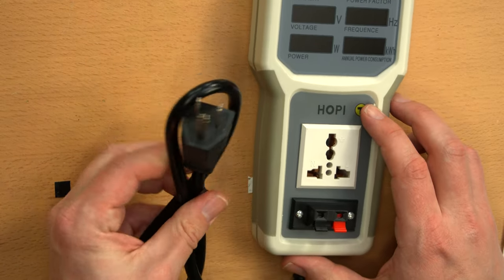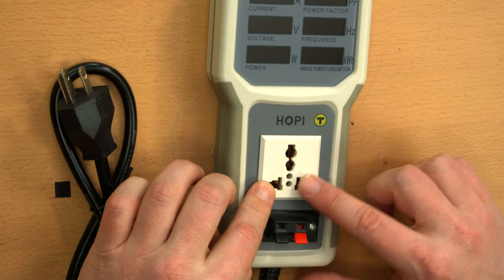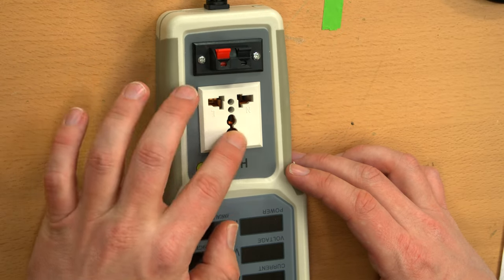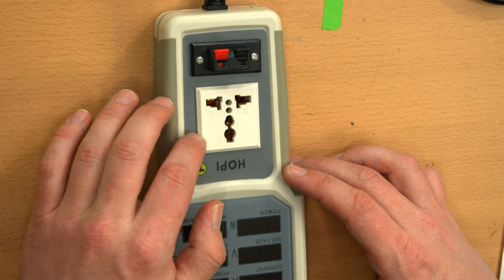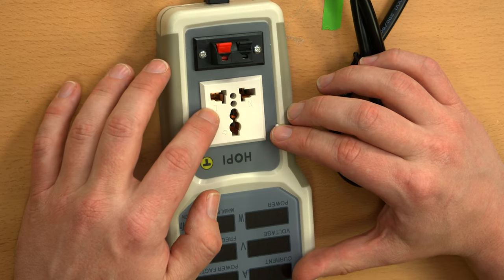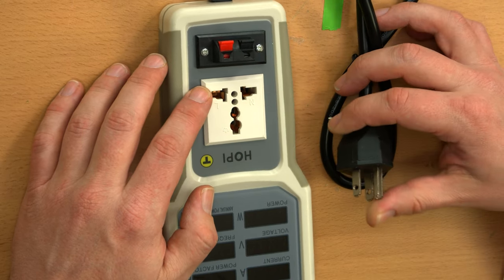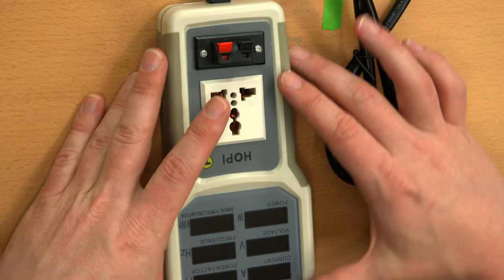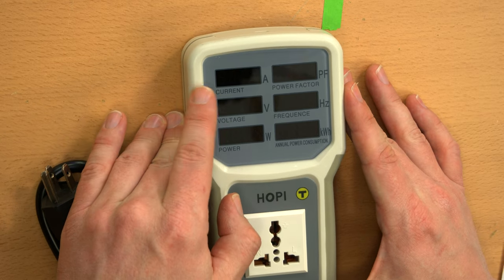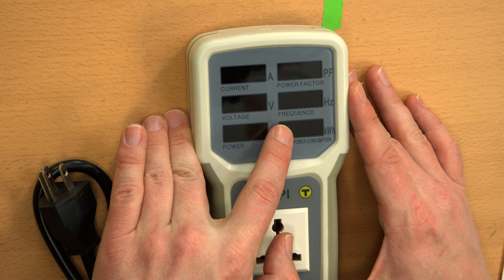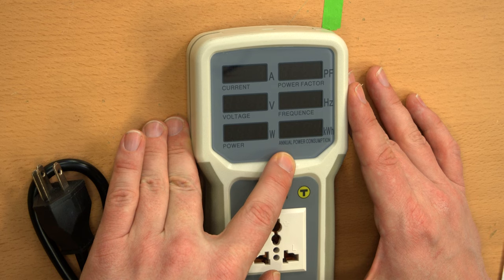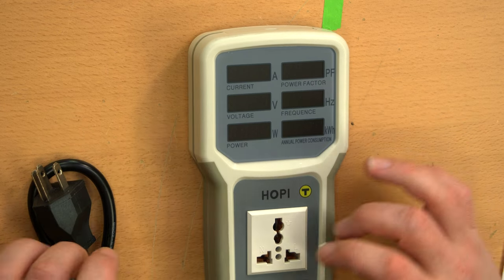Here it is. Very simple operation. This plug goes into an electrical outlet, and you plug whatever you want into here. This is a quite universal power socket that can take US-style plugs, UK plugs, European plugs, Chinese plugs, all sorts of crazy stuff. Whatever you plug into it, it will give you all sorts of measurements, for example, the current, power factor, voltage, frequency, the power in watts, and the annual power consumption in kilowatt hours.